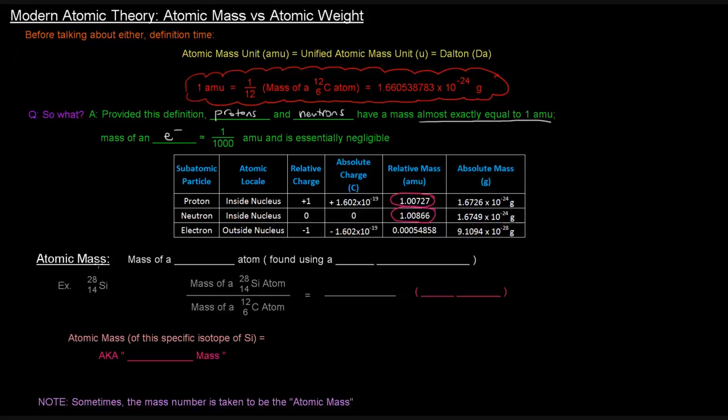So you'll see here, these values are almost exactly equal to one. And they're often taken to just be equal to one when calculating the atomic mass, which is why the mass number is sometimes referred to as the atomic mass. But anyway, let's keep this in mind when we go through and discuss atomic mass, as well as atomic weight.